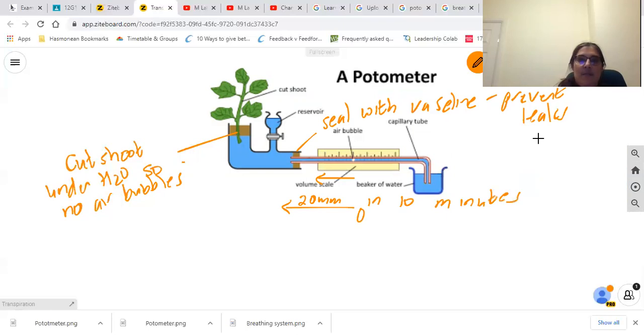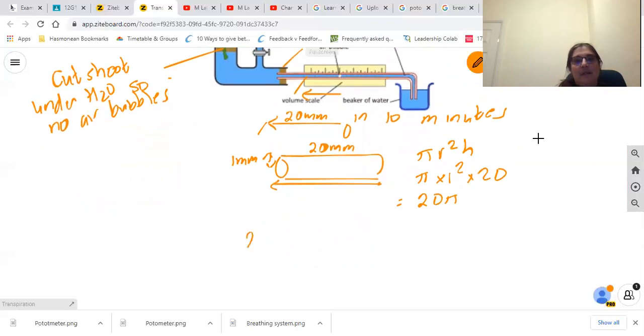What can you do with that? If you think of this capillary tubing as a cylinder, and the air bubble has moved from there to there, that means that volume of water has been taken up. If that is 20 millimeters and the radius of our tube is one millimeter, then we can use pi r squared h to work out the volume that has been taken up, which in this case would be 20 pi. If it's 20 pi in 10 minutes, then 20 pi divided by 10 gives us 2 pi per minute. Then you could repeat the experiment again.